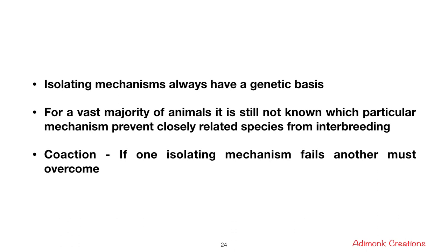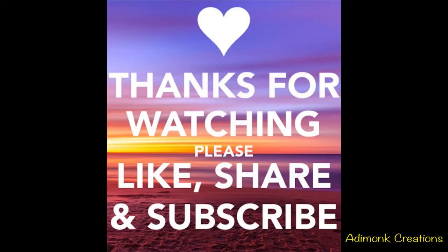Isolating mechanisms always have a genetic basis. For the vast majority of animals, it is still not known which particular mechanisms prevent closely related species from interbreeding. An important principle to remember is coaction: if one isolating mechanism fails, another must overcome it. Isolating mechanisms always occur in nature, and with this we come to the end of this class. Thank you for listening — please like, share, and subscribe to the channel for upcoming classes.